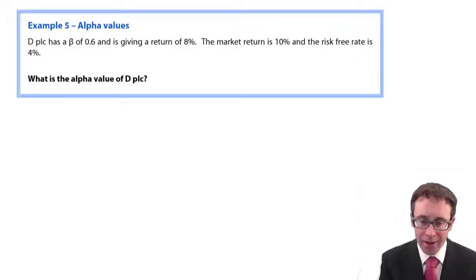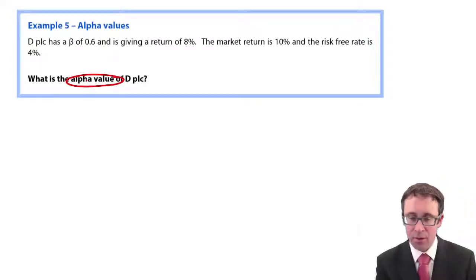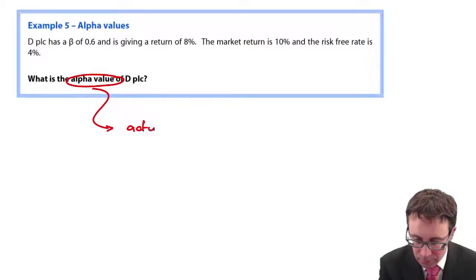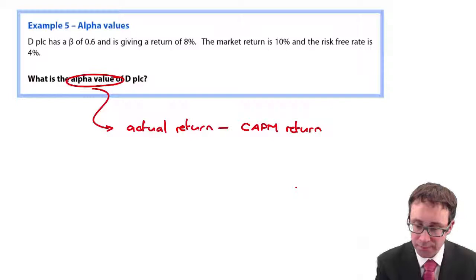So if we look at the question here, it just says, what is the alpha value of D plc? So that goes through there and looks at the actual return less your theoretical CAPM return.